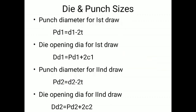Next point is punch and die sizes. Punch diameter for the first draw is pd1 = d1 − 2t, where t is thickness and d1 is the diameter at the end of the first draw. Die opening diameter for the first draw is dd1 = pd1 + 2c1, where c1 is the clearance for the first draw. Punch diameter for the second draw pd2 = d2 − 2t, and die opening diameter for the second draw dd2 = pd2 + 2c2, where c2 is the clearance for the second draw.